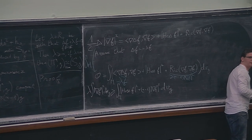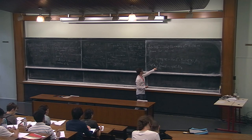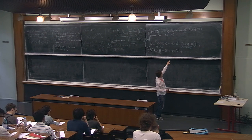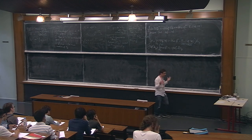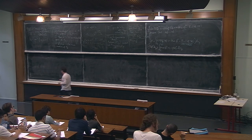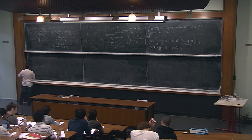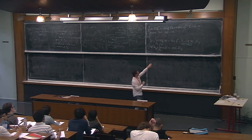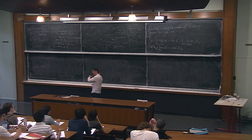Now we need to handle the Hessian term more carefully to get the optimal inequality. We can already get λ ≥ n−1 by noting |Hess f|² ≥ 0, but we can do better. We decompose the Hessian into its trace-free part and a multiple of the metric: Hess f = Hess₀ f + (1/n)(Δf)g, using the fact that trace-free matrices and the identity are orthogonal.